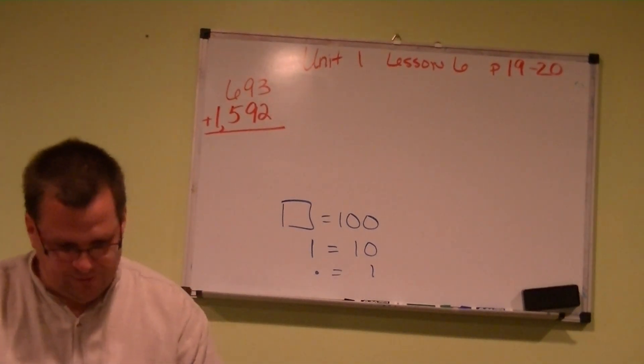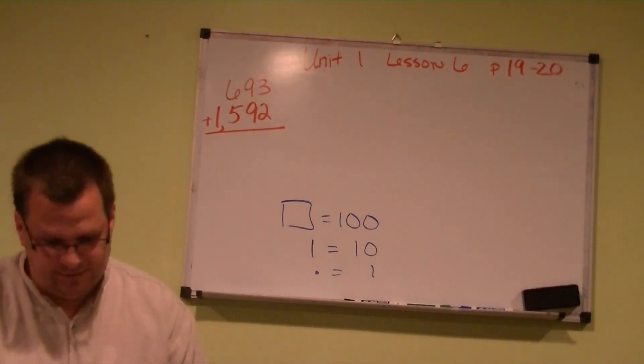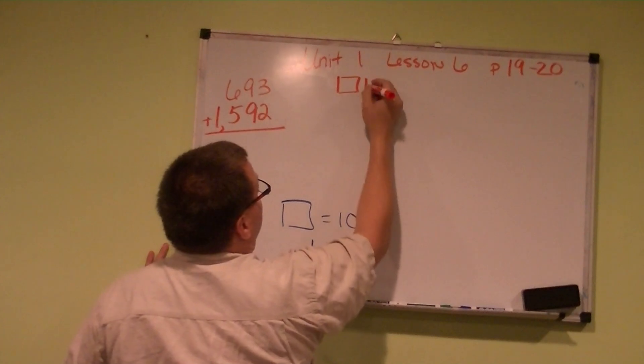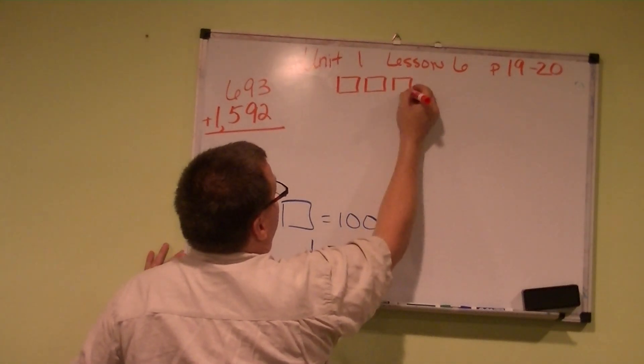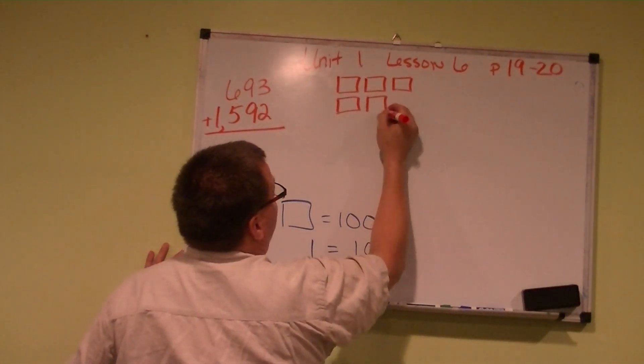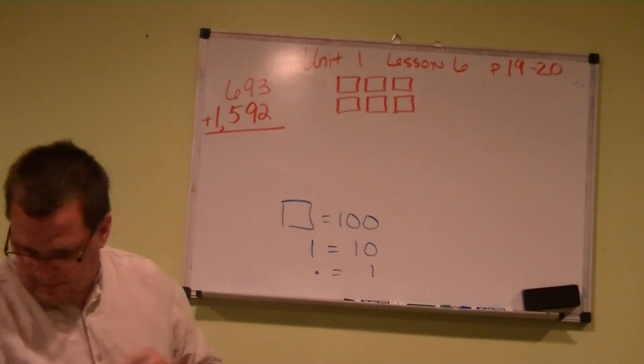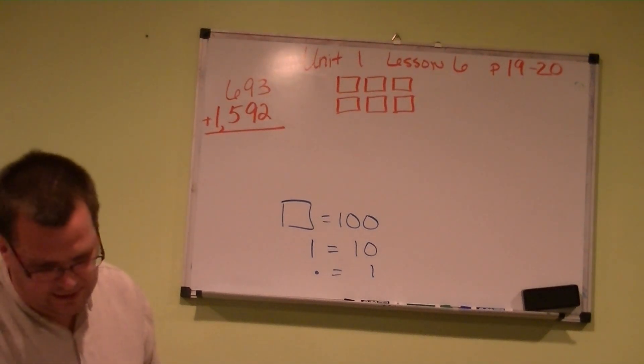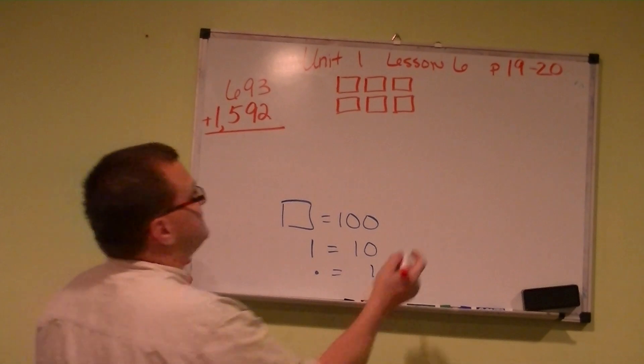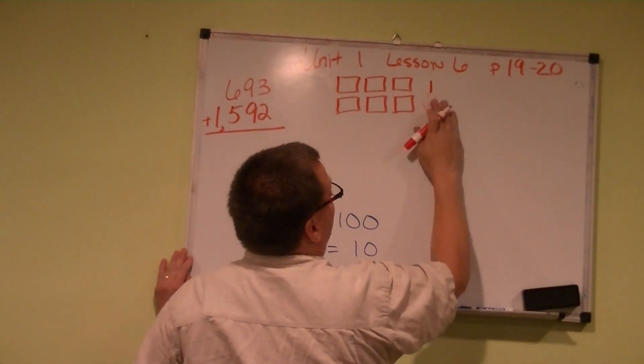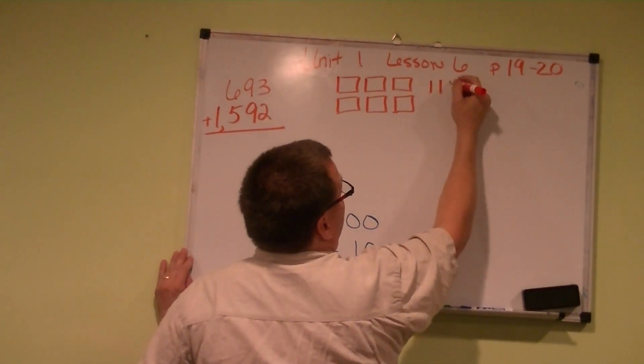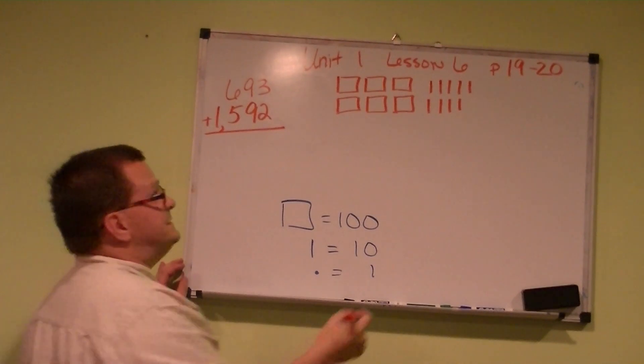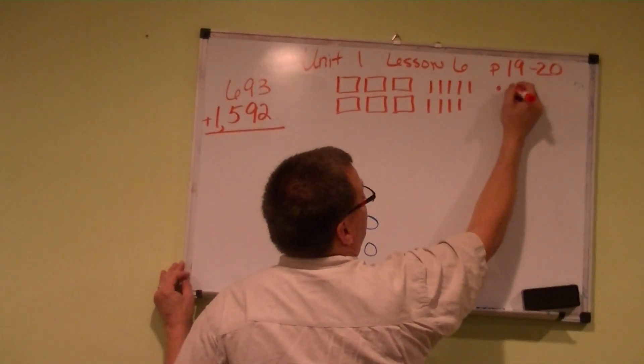So first of all, let's start off with the top one. The Creepy Crawlers at the Science Museum. We have 693 spiders. So we need 6 one hundred blocks: 1, 2, 3, 4, 5, 6. Then we need 9 tens: 1, 2, 3, 4, 5, 6, 7, 8, 9. Then 3 ones: 1, 2, 3.